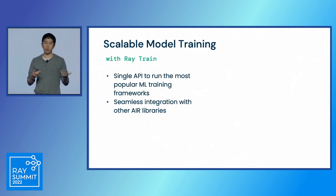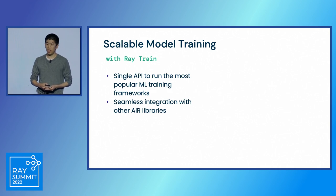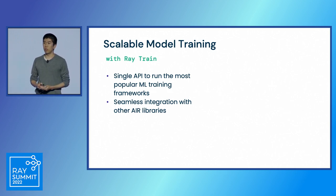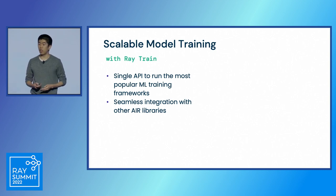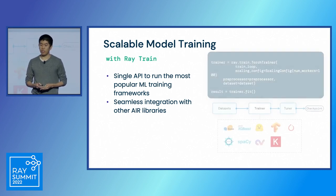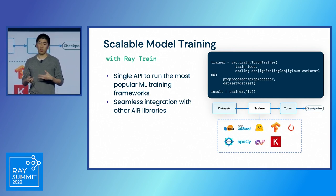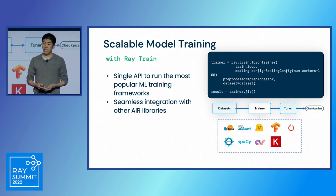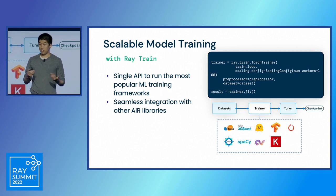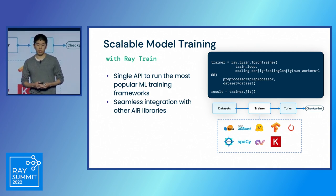This leads to the Ray Train library, which provides scalable model training. Train is the single API to run the most popular ML training frameworks and offers seamless integration with the other Ray libraries. For example, you can easily create a Torch Trainer, XGBoost Trainer, or Hugging Face Trainer, and so on. These trainers integrate seamlessly with datasets and with Tune.